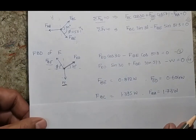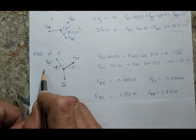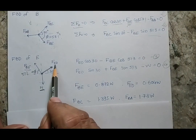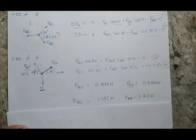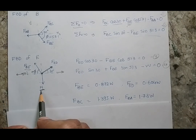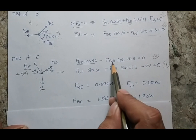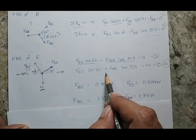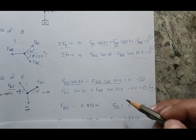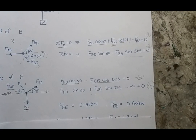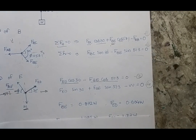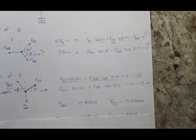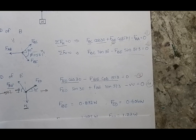Solving the equilibrium of joint E: the horizontal component of F_ED balances the horizontal component of F_BE, and the vertical components of F_ED and F_BE together balance W. This gives a fourth equation. Care must be taken when solving these four equations algebraically — errors here propagate through the entire solution since each computed value is substituted into subsequent equations.